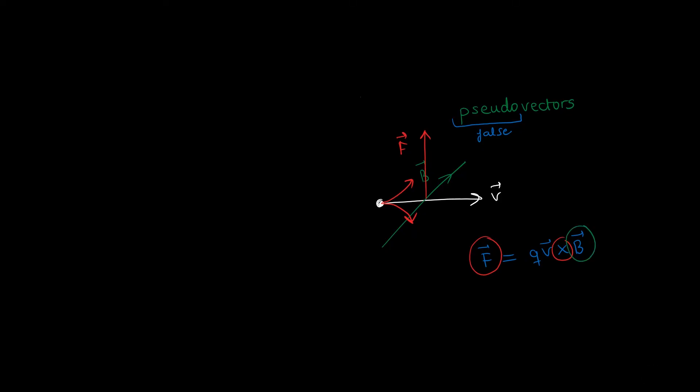The answer is that since B is a pseudo vector that itself comes from a cross product, then by applying the cross product again we arrive at a force F which is independent of which convention we choose, exactly as it should.